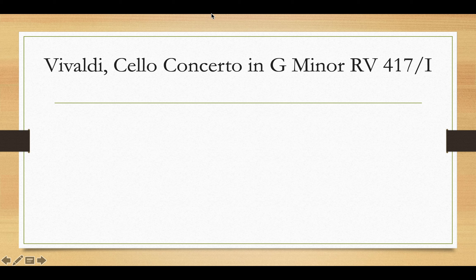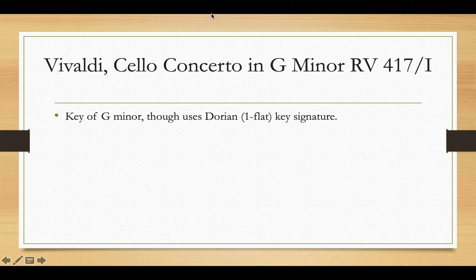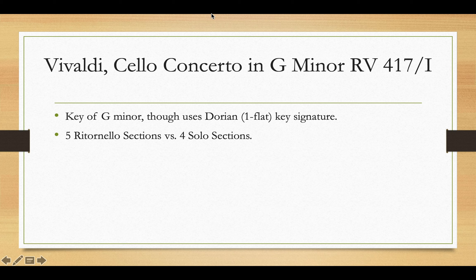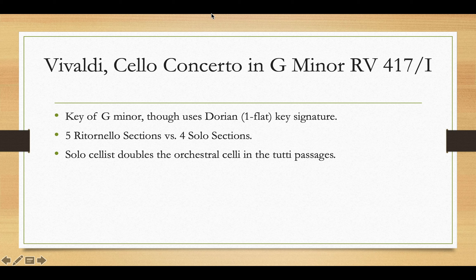Next, let's take a look at Vivaldi's Cello Concerto in G minor, RV417, the first movement. This piece is in the key of G minor, though you might be surprised looking at the score — it uses a key signature of one flat, the G Dorian key signature. Key signatures were not standardized until the mid to late 18th century, so it's not uncommon for Baroque pieces to have one more or one fewer accidental than we would expect. This movement features five ritornello sections and four solo sections. You may also notice that the solo cello doubles the orchestral cello in the tutti passages; in some performances the solo cello may be the only cello in the ensemble.